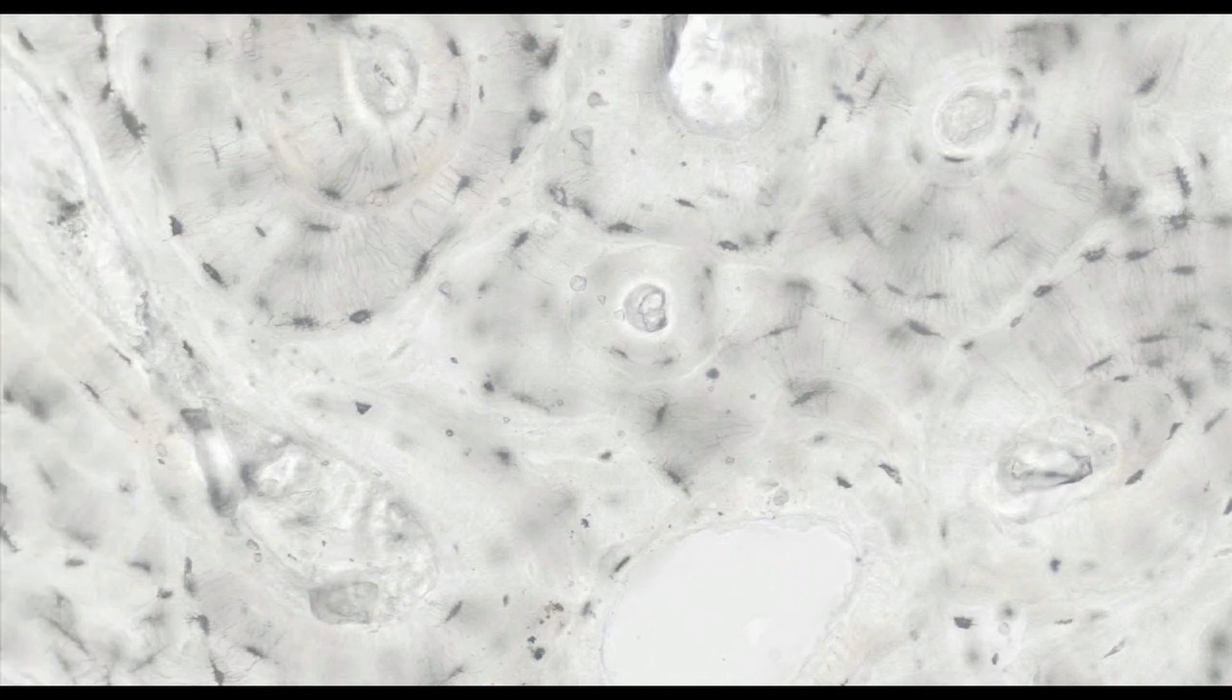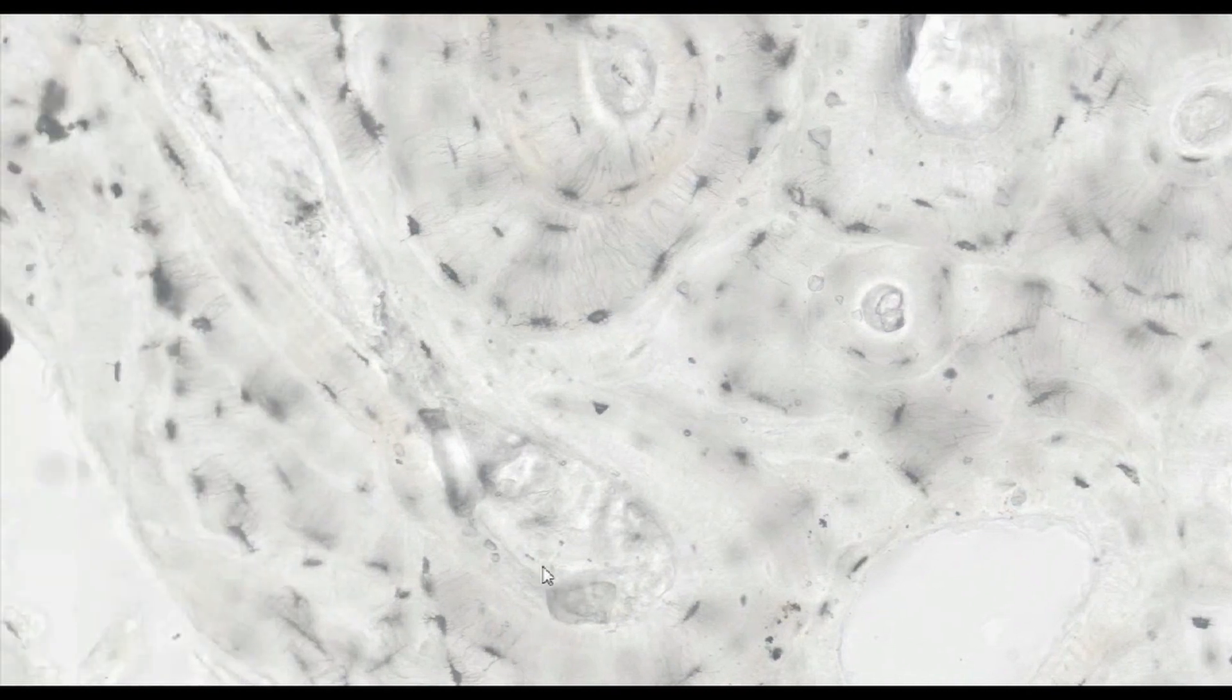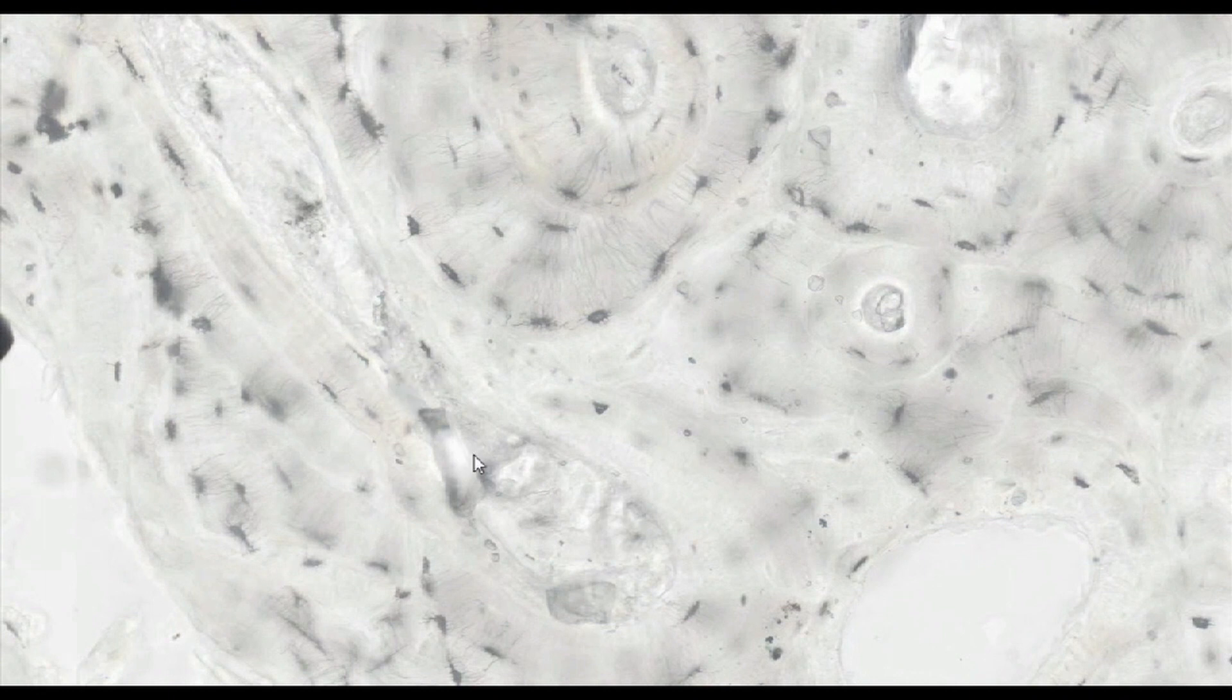Volkmann canals penetrate the bone across the Haversian systems. These are wider vascular canals penetrating the bone from side of the periosteum and or the marrow cavity.